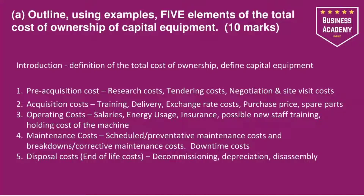Then we've got operating costs: salaries, energy usage, insurance, possible new staff training, and any holding costs of the machine. Operating costs are the costs of actually using the machine. Maintenance costs can break down into two categories: scheduled or preventative maintenance, and breakdowns or corrective maintenance. You have the cost of scheduled maintenance, but if you've got breakdowns there's also the cost of repair and the downtime cost while you repair the item. All of this can add up to quite costly amounts for an organisation.